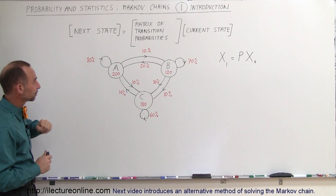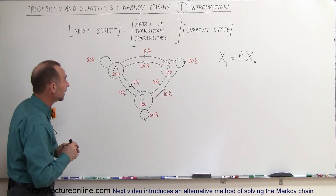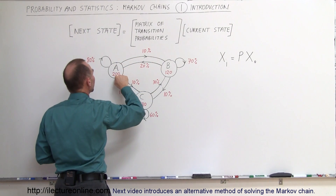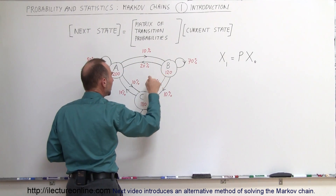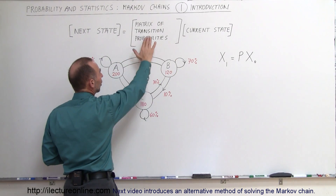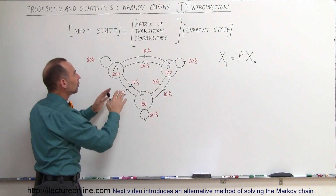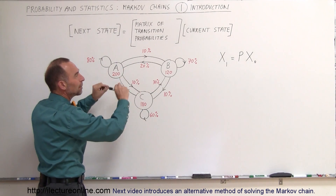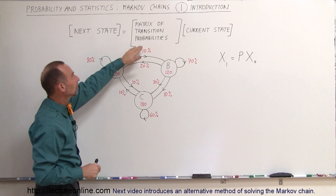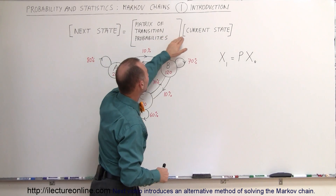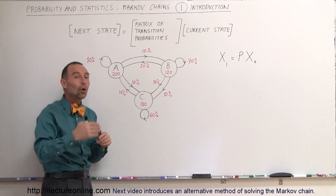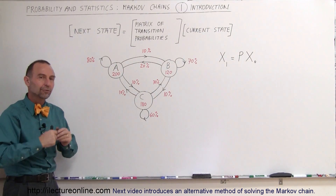The way we calculate this is that we have a current state. The current state is that we have 200 going to A, 120 going to B, and 180 going to C. We then have a probability matrix — called the matrix of transition probabilities — that determines how we can predict how people will go to either the same store or different stores the following week. When we multiply that probability matrix with the current state matrix, we get the next state matrix.